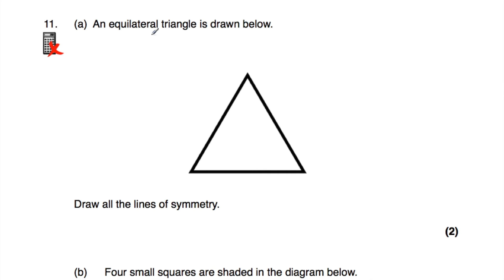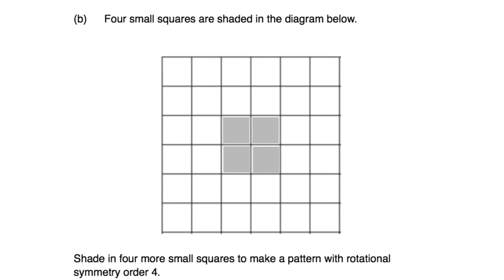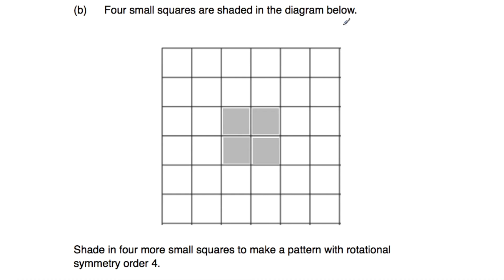Question number 11: we've been given an equilateral triangle. Part A: draw all the lines of symmetry — the three lines of symmetry for the equilateral triangle. Part B: four small squares are shaded and we need to shade four more to make a pattern with rotational symmetry order 4. Shading four more squares — one at each 90-degree position — means spinning through 360 degrees lands on itself four times. There are multiple valid options.